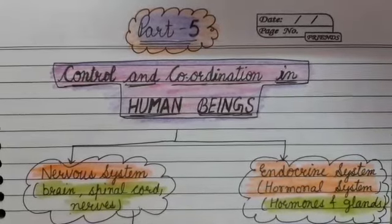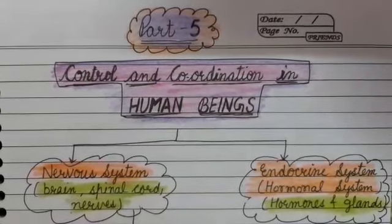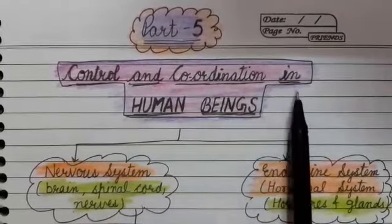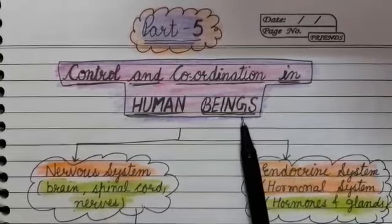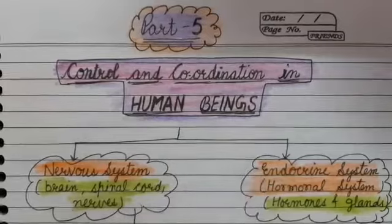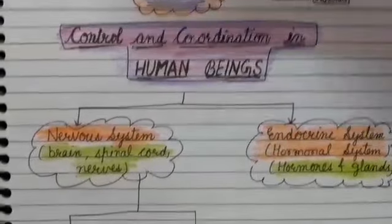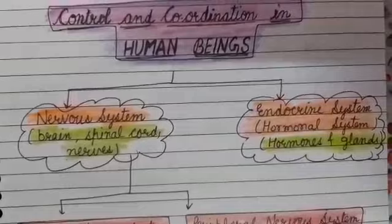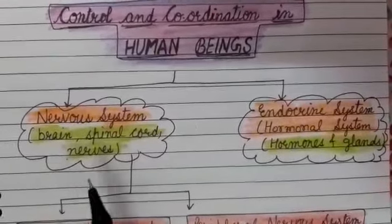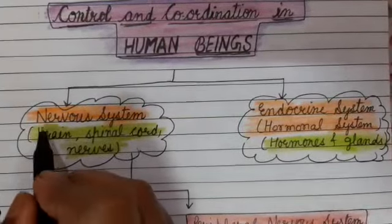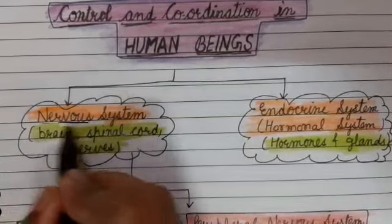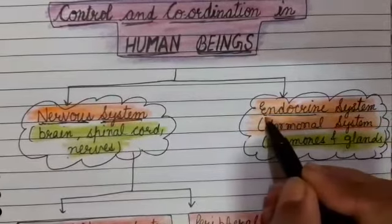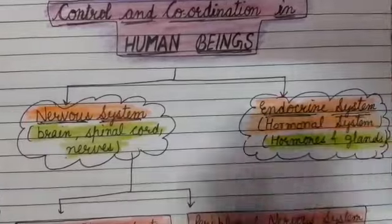Hello students, today our topic is Control and Coordination in Human Beings. The process of control and coordination in human beings has two parts. We will study this topic under two headings: Nervous System and Endocrine System.